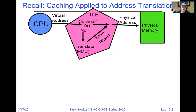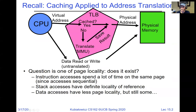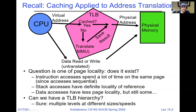On the other hand, if things aren't cached, we have to go through a translation process with the MMU, which involves a table walk through multiple levels of the page table. When we get that result, we can bring it back to the TLB, which will cache it for future access. There's often an untranslated path for the kernel. The question is really one of page locality — instruction accesses have definite locality, as do stack accesses and some data accesses. The TLB can also be a multi-level cache.